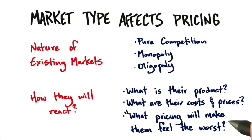And more importantly, can we do strategies like bracket them? Can we undercut them? Can we niche or blue ocean strategy them? These are the things you want to think about if there are dominant players in an existing market. You want to actually have pricing as a strategy, not just a reaction.